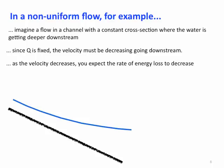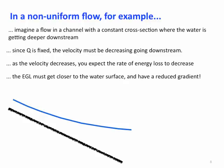As the velocity decreases, you expect the rate of energy loss to decrease. That is, slower velocities will lose energy at a slower rate than do higher velocities. This means that the EGL must actually get closer to the water surface, but have a reduced gradient compared to the slope of the bottom.